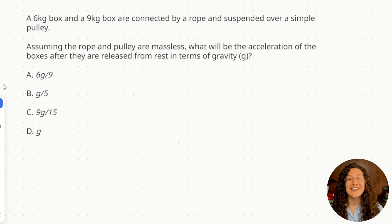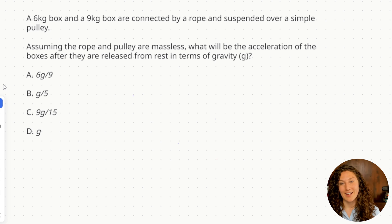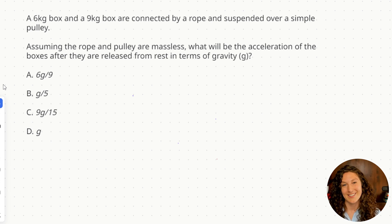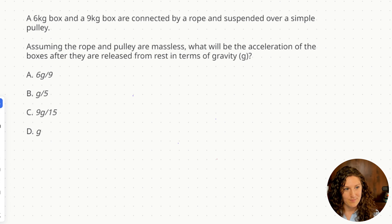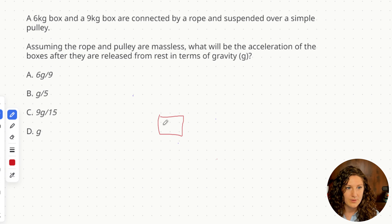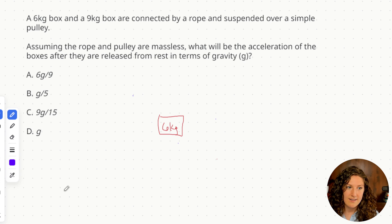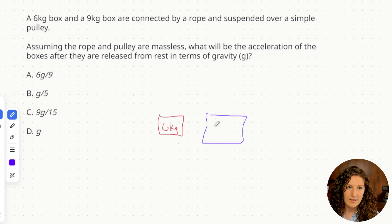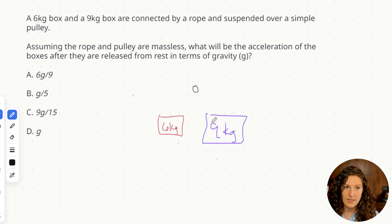Go ahead, pause this video, try this question on your own first, and then we'll come back and do it together. Tricky question stems like this are very common on physics questions on MCAT materials and on test day. The key to this question is the setup — we're going to draw a free body diagram. We've got a box that is 6 kilograms and a box that is 9 kilograms, connected by a rope over a pulley. They're at rest and suspended. Assuming the rope and pulley are massless, we just don't need to include them in our calculations.